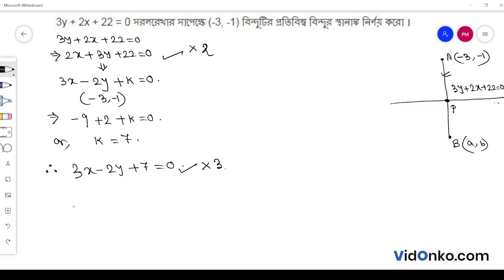How do you do this term? This term is equal to 4. This term is equal to 4x plus 6y plus 44 is equal to 0. And this term is equal to 9x minus 6y plus 21 is equal to 0.